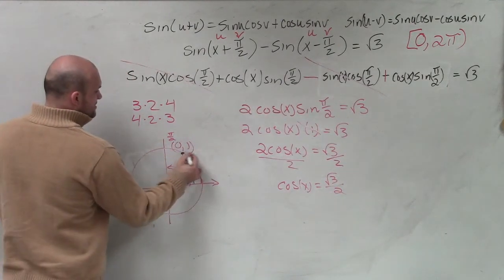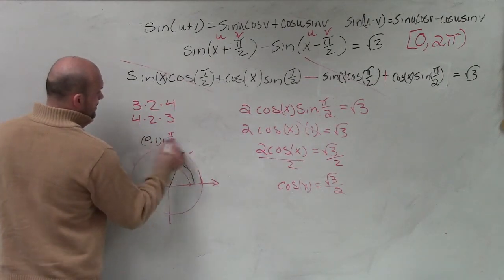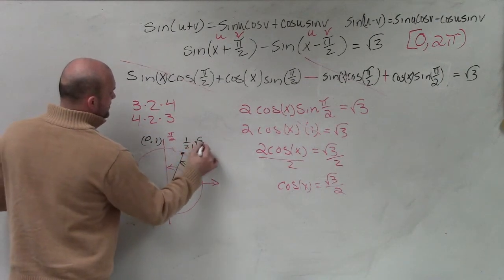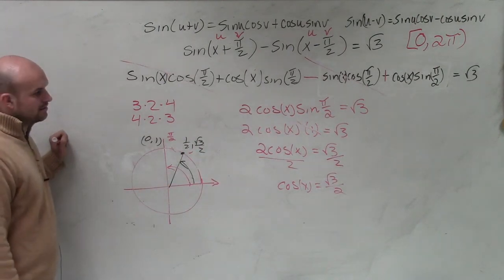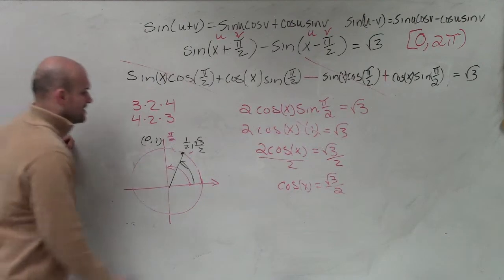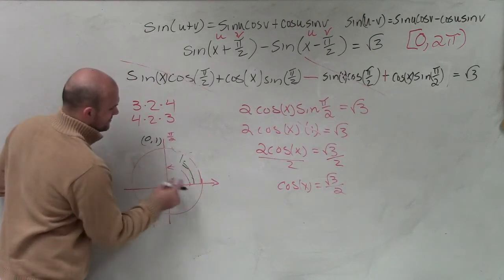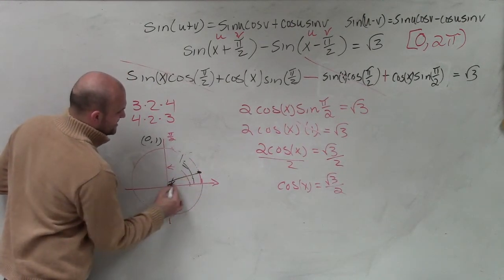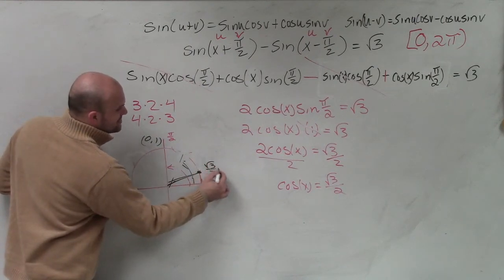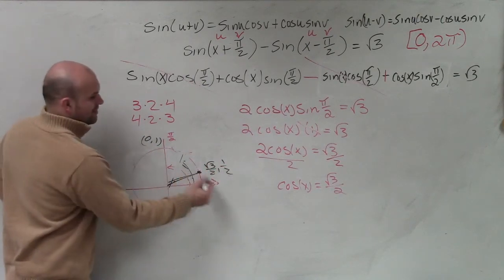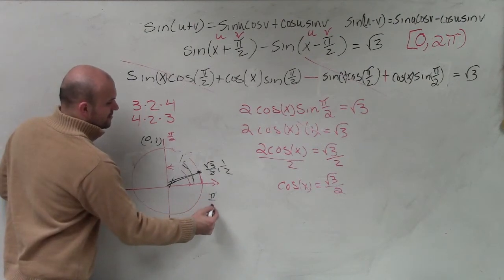This point right here, because if that's 0 comma 1, this point is 1 half comma square root of 3 over 2. What? Oh, it's x, right? Thank you. I knew that was wrong. Not really. But now I see that's x, not the y. I was thinking y. So this point, which is square root of 3 over 2 comma 1 half. So what is that point? Well, that point is π over 6.